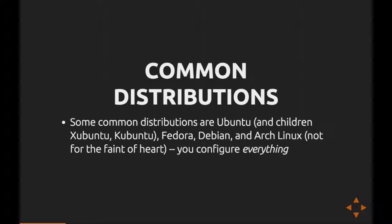Some common distributions are Ubuntu and its many children, including Xubuntu, Kubuntu, and Elementary OS. You'll also see Fedora, Debian (which is where Ubuntu comes from), and Arch Linux. Arch Linux is not really for the faint of heart — you configure everything. You'll sometimes also hear of Gentoo, a source-based distribution similar to Arch except you also compile everything from source. We would not recommend either of these for first-time Linux users; Ubuntu and Fedora are probably great choices.